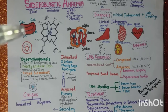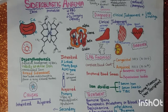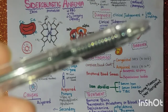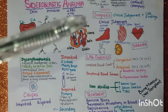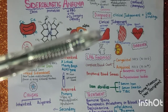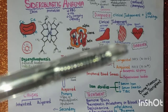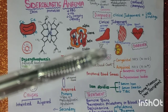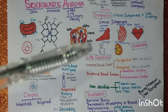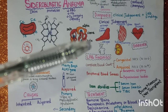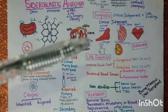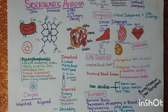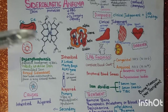Diagnosis of sideroblastic anemia is based on clinical judgment and lab findings. In clinical judgment, you will see enlarged liver, enlarged spleen, heart disease, fatigue, kidney damage, diarrhea, and other symptoms of anemia like palpitations, difficulty in breathing, change in stool color, and heart conditions.